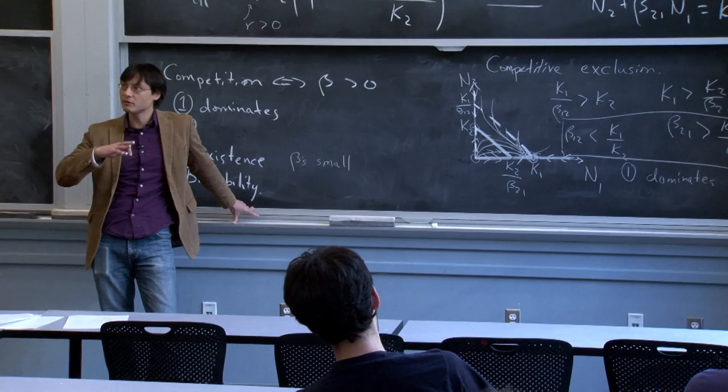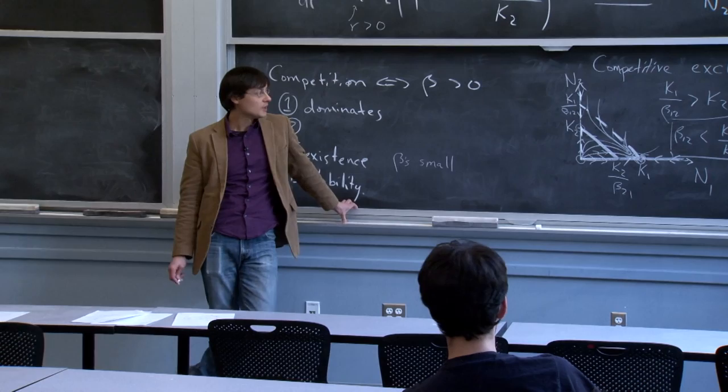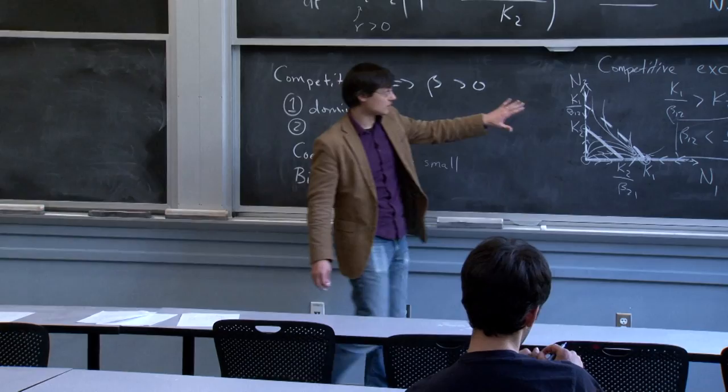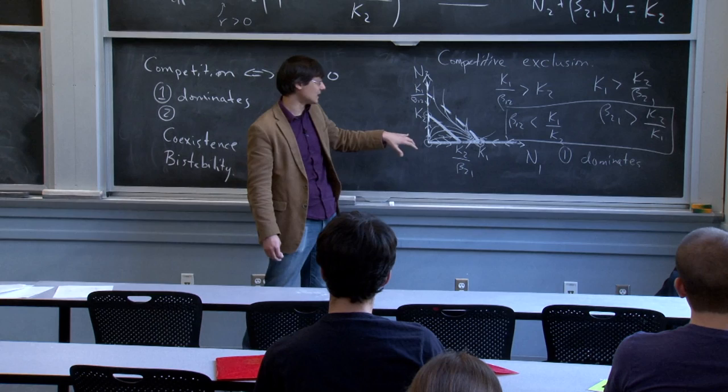This is one of the four outcomes. You should be able to, for a given combination of betas and K's, figure out the outcome using algebra, derivatives, fixed-point stability analysis, and drawing.